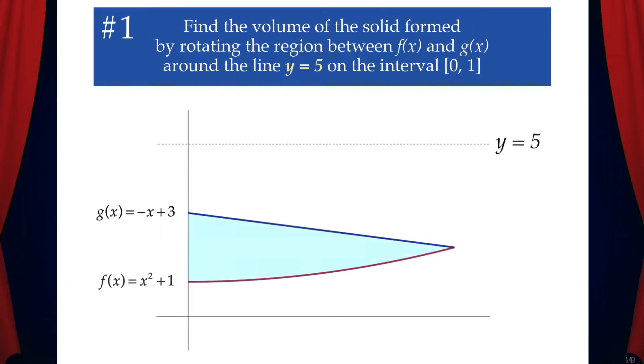Let's do some examples. Example 1: Find the volume of the solid formed by rotating the region between f of x and g of x around the line y equals 5 on the interval [0, 1].